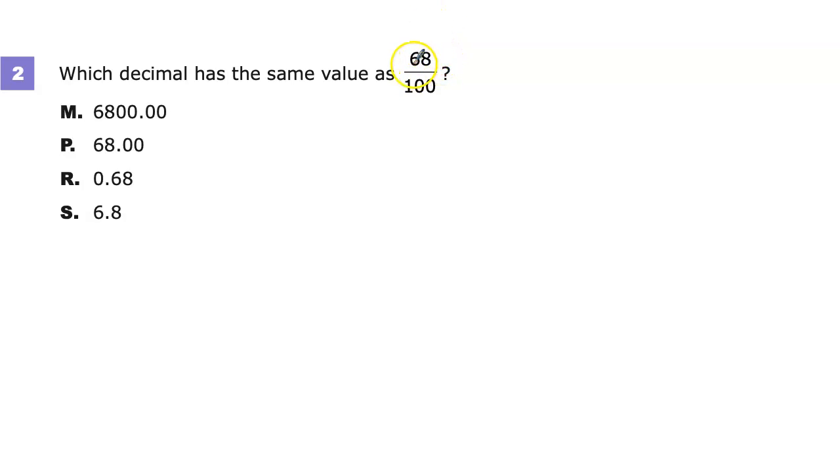I need to figure out where to put this 68 in decimal form. The decimal point is right there. If I'm dividing by 100, I take the number of zeros, which is two, and move the decimal to the left because it's a smaller number. When you get smaller, the decimal goes left.